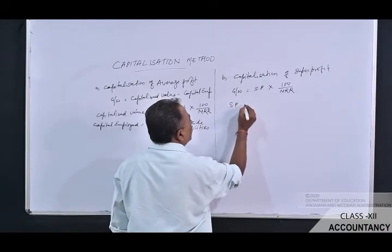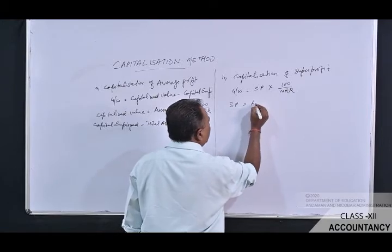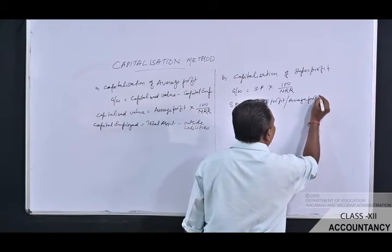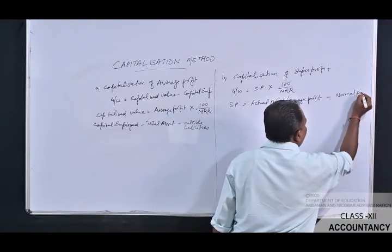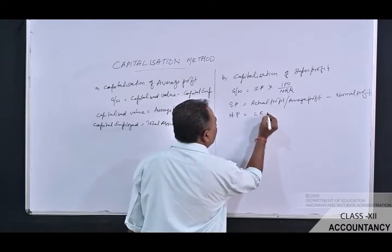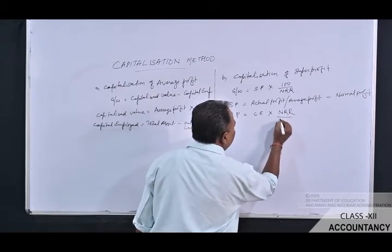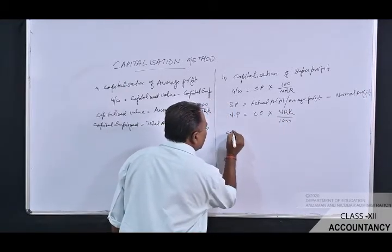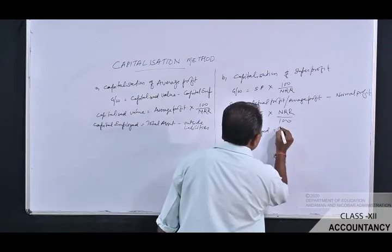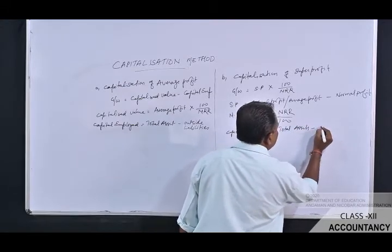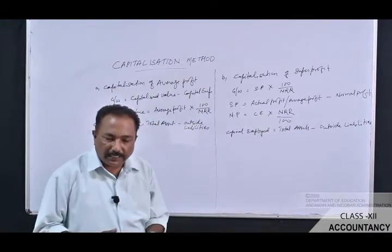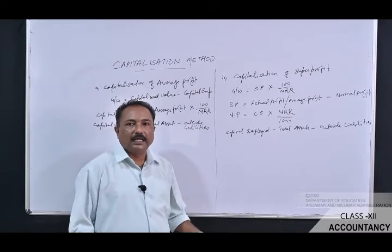Under capitalization of super profit, the formula is: Goodwill = Super Profit × 100 / Normal Rate of Return. Super Profit = Average Profit − Normal Profit. Normal Profit = Capital Employed × Normal Rate of Return / 100. Capital Employed = Total Assets − Outside Liabilities.